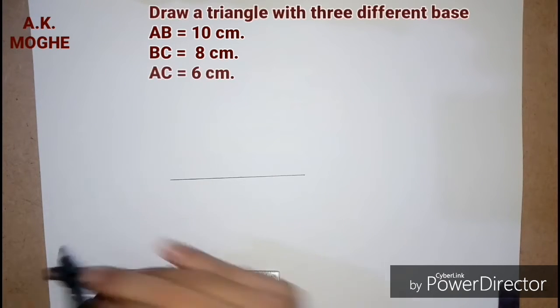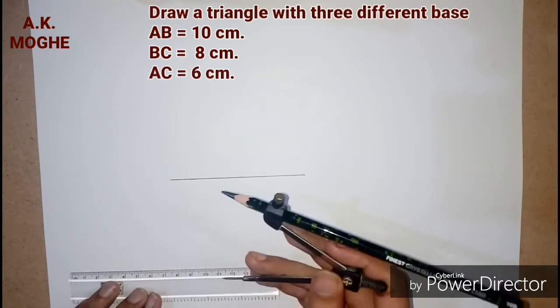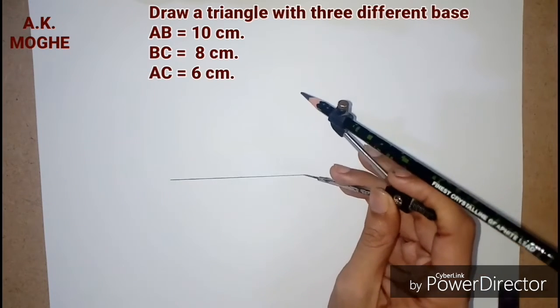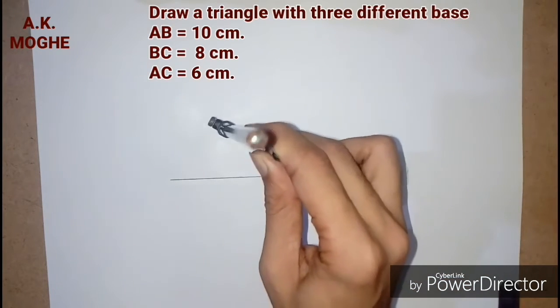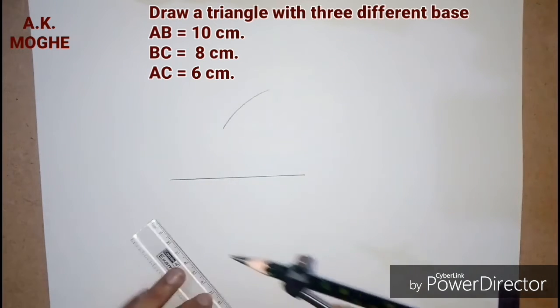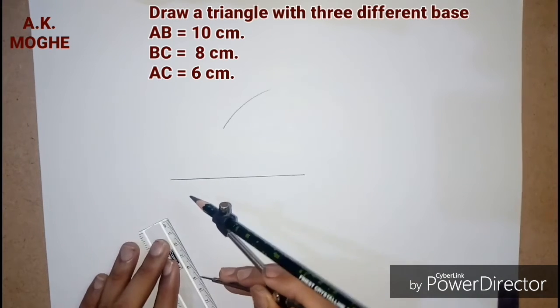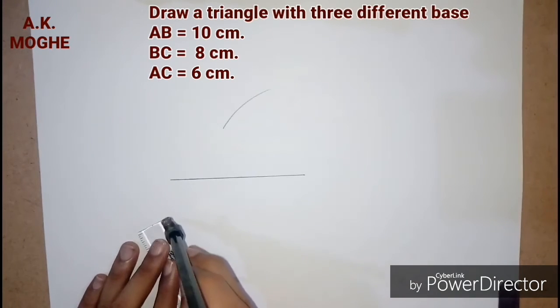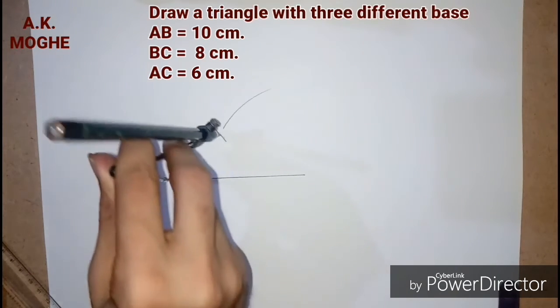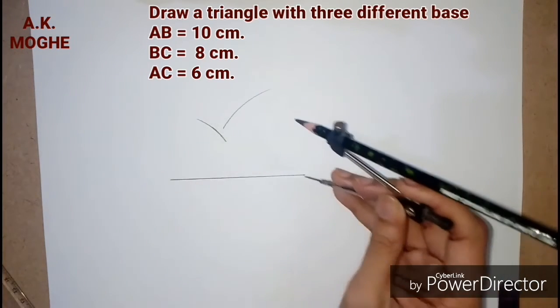Take the second side BC with appropriate measurement in compass. Mark a point above the line AB, and similarly take the distance AC in the compass and mark a point above the line AB.